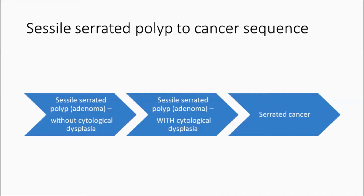This slide shows the progression of sessile serrated polyps to cancer. The initial lesion, and perhaps 95% of all sessile serrated polyps, are the sessile serrated polyp or adenoma without cytological dysplasia. Sessile serrated polyp and sessile serrated adenoma are, in fact, synonymous terms.